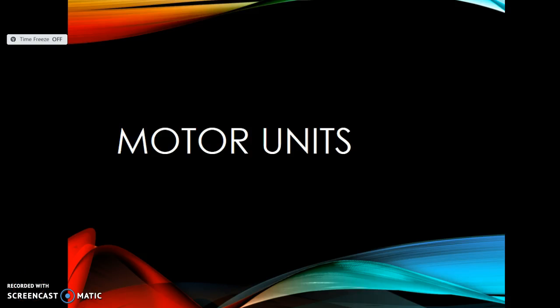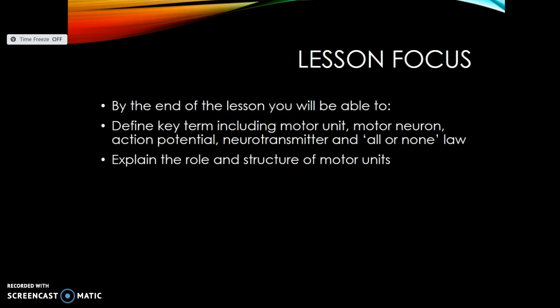Hello guys, welcome to anatomy and physiology screencast. This is your last lesson on the muscular system. We're going to look at the role of motor units in muscular contraction. By the end of the lesson, you should be able to focus on the concept of a motor unit, a motor neuron, an action potential, a neurotransmitter called acetylcholine, and then we're going to look at the all-or-none law which allows muscle contraction to take place.